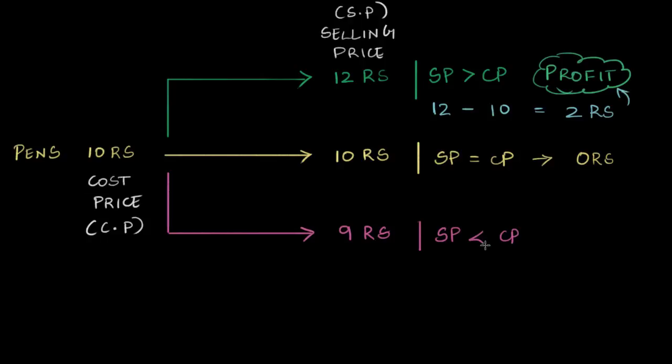Now what you've done is sold this pen such that the selling price is actually less than the cost price. When you do this, you've made a loss. Your selling price was lower than your cost price - you bought it for 10 but sold it for just 9. In this case, the loss is CP minus SP, which equals one rupee, a loss of one rupee.